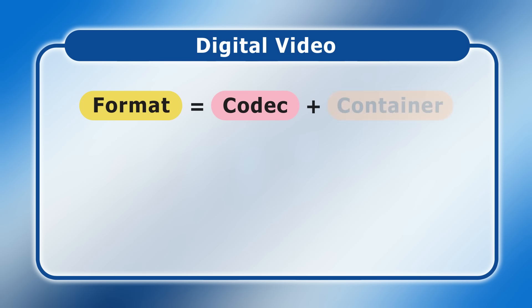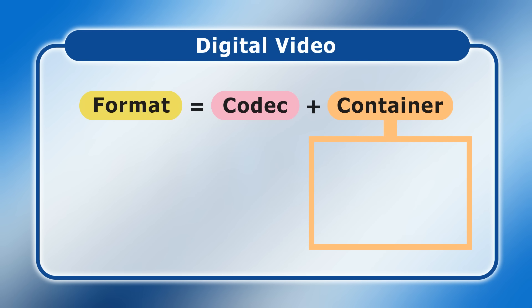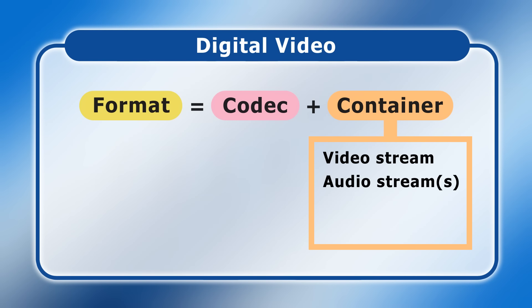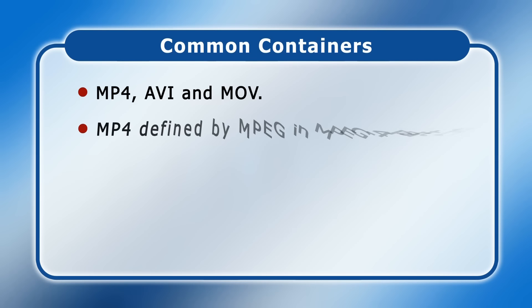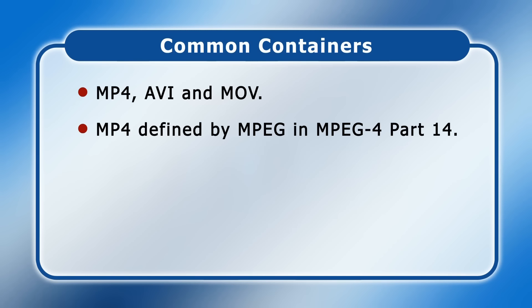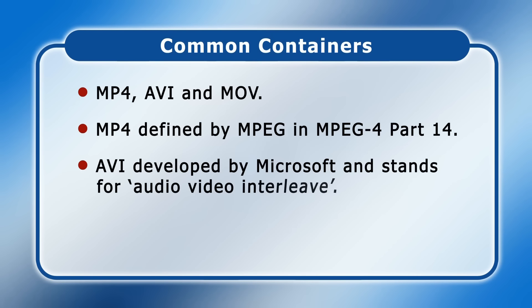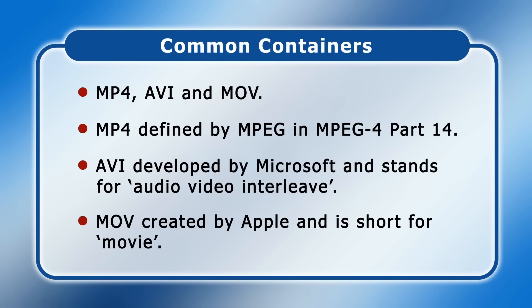As noted earlier, a digital video format is a combination of a video codec and a container. A container is a digital box or wrapper used to store a video stream, as well as one or more accompanying audio streams and potentially other related content such as subtitles and metadata. Digital video containers include MP4, AVI and MOV. MP4 was defined by the Motion Picture Experts Group in their MPEG-4 Part 14 specification. AVI was developed by Microsoft and stands for Audio Video Interleave, and MOV was created by Apple and is short for Movie. All three of these containers can store video encoded with many different codecs, with MP4 and MOV currently having the widest range of both professional and consumer applications.